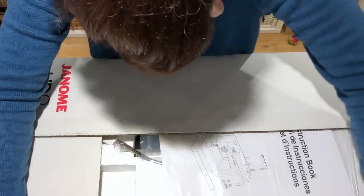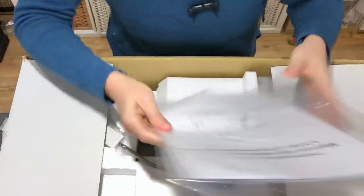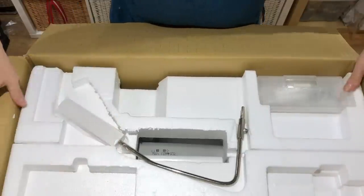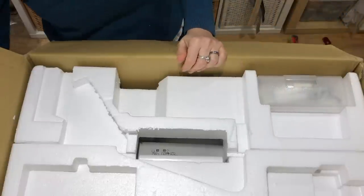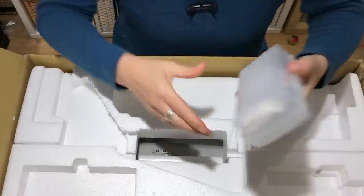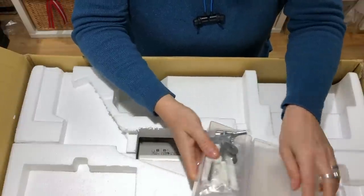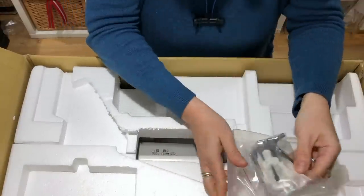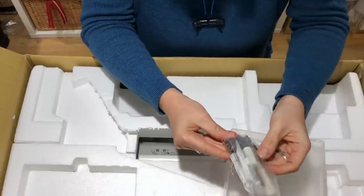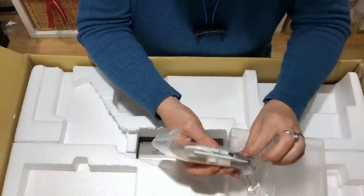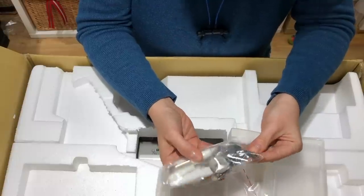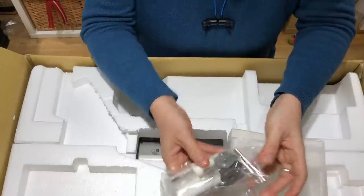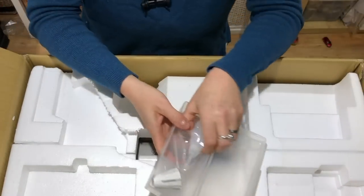Alright, so I have my instruction book and my warranty. And I wasn't sure if it was going to come with a knee lift but it does and I always use this. Then I have, it looks like the accessories, well some of them. Screwdrivers, two screwdrivers, a bunch of bobbins. I'm going to open this up and we'll look at the bobbins more closely because these are giant. These are bigger than average. Some needles. And I'm not sure what, I think these are other tools. So I'll have to look at these more closely later. Of course, oil.